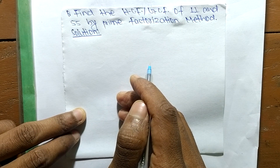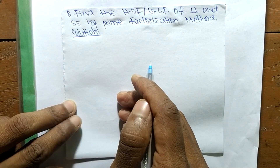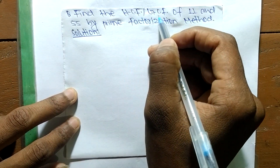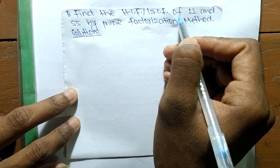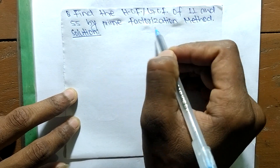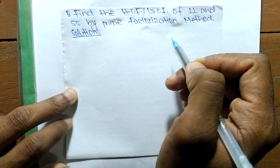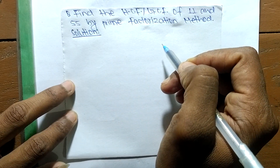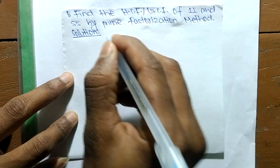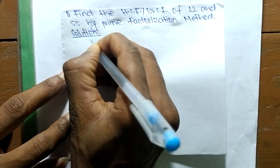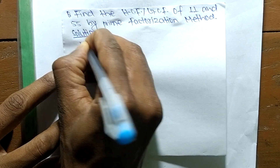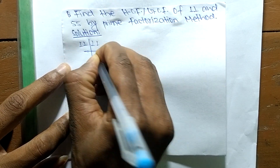Today in this video we shall learn to find the HCF or GCF of 11 and 55 by prime factorization method. First, we find out the prime factors of 11, which is 11 times 1, meaning its prime factor is 11.